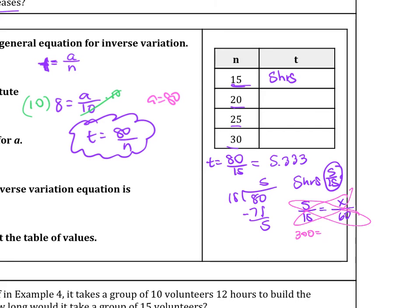This is 300 equals 15x, then divide by 15. And then when you do that, you would find that x is 20. So that's one way to do that. So 20, that means it's 5 hours and 20 minutes.